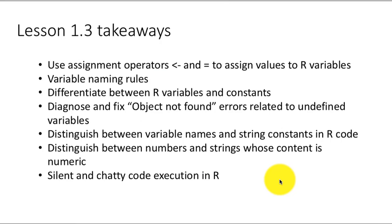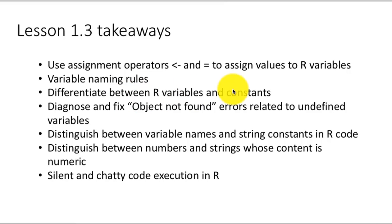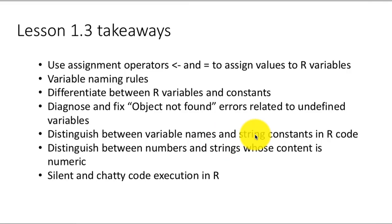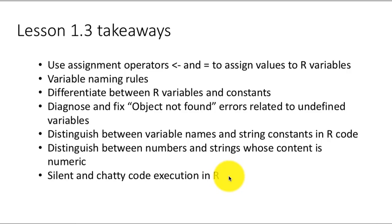That completes our discussion of lesson 1.3. In this lesson you learned how to use the assignment operators — the less-than-dash and the equals assignment operator — to assign values to variables. We discussed variable naming rules. We differentiated between R variables and R constants, and specifically talked about under what conditions you will get the error "object not found" and how to fix it. We distinguished between variable names and string constants in R code — telling you when to put quotes around something and when not to. We also distinguished between numbers and strings whose content happens to be numeric, the difference between 300 without quotes and 300 with quotes. And finally we looked at silent and chatty code execution in R, and what to do — which is surround assignment expressions in parentheses if you want the assignment to happen and you also want to see the result on the screen.